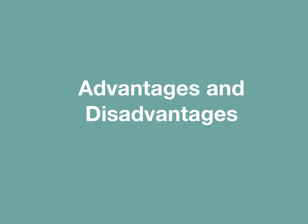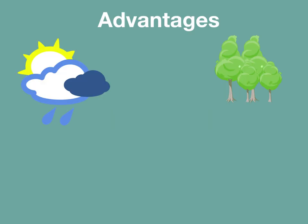Let's look at some advantages and disadvantages. Due to more genetic variation, if the environment changes, some organisms in the population will be better adapted to it than others, and they will be able to survive and reproduce, keeping the population going.